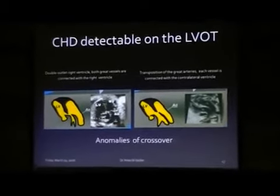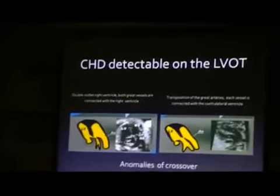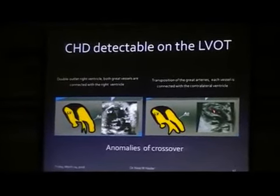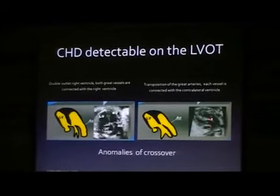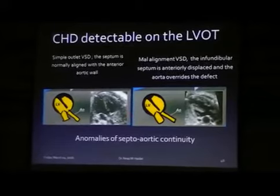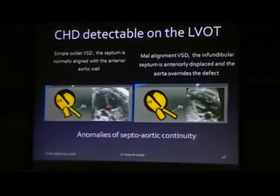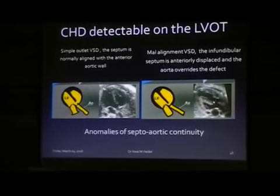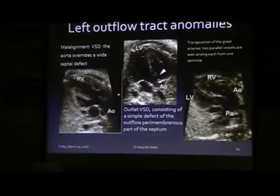These are the anomalies of the crossover — from the right ventricle, both great arteries originate. Here the transposition of the great arteries — the aorta originates from the right ventricle and the pulmonary artery originates from the left ventricle. This is the anomaly of the septal-aortic continuity — here the septal outlet VSD and the septum is normally aligned with the anterior aortic wall, but here the septum is in malalignment and the aorta overrides the defect.